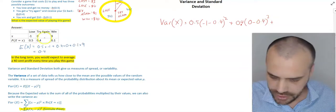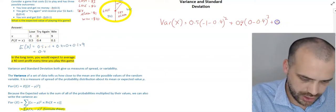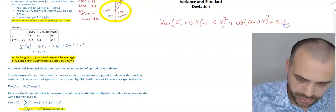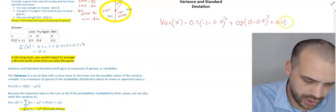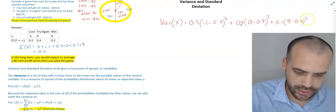And then finally, we're taking our last value, plus, we need the probability first, 0.1. And then we are multiplying it by the expected value, 9 minus 0.4. And then we are squaring it.